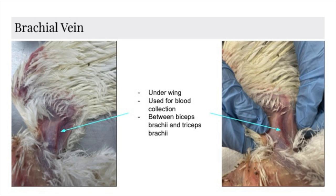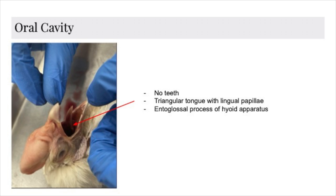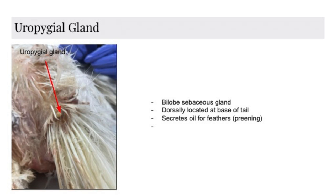The brachial vein is located underneath the wing, situated in between the biceps brachii and the triceps brachii. Its primary purpose is for blood collection. In the oral cavity of chicken, there are no teeth present. The tongue is triangular with small taste buds known as lingual papillae. Also within the tongue muscle is the entoglossal process of the hyoid apparatus. The uropygial gland is a bilobe sebaceous gland, dorsally located at the base of the tail. It secretes oil for feathers, which is spread over the body through the process of preening.